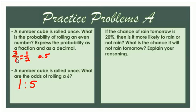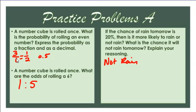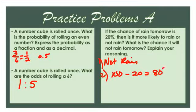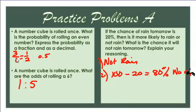If the chance of rain tomorrow is 20%, is it more likely to rain or not rain? If it's a 20% chance, it's more likely not to rain because it's less than 50% — so it's unlikely to happen. What is the chance it will not rain? 100% minus 20% equals an 80% chance of no rain. The two percentages must equal 100%.